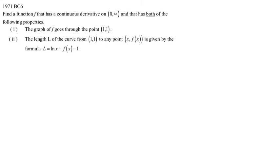The problem says: find a function f that has a continuous derivative on the interval from zero to infinity and has both of the following properties. First, the graph of f goes through the point (1, 1) — this is really just going to help us solve for C. Second, the length L of the curve from (1, 1) to any point (x, f(x)) is given by the formula L equals natural log of x plus f of x minus 1. That's like really weird, but I kind of know what to do with it because I know what arc length is.